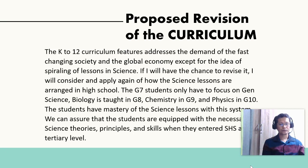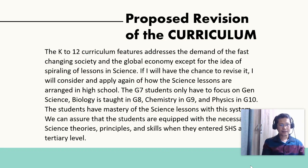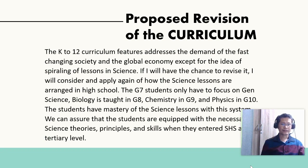If I were given a chance to suggest a revision for the present curriculum, the K-12 curriculum features address the demand of the fast-changing society and the global economy, except for the idea of spiraling science lessons. As a science teacher, I would consider applying again how science lessons were arranged in high school before: grade 7 students focus only on general science, biology is taught in grade 8, chemistry in grade 9, and physics in grade 10. With this system, students have mastery of the science lessons, and we can assure that they are equipped with the necessary science theories, principles, and scientific skills before they enter senior high school and the tertiary level.